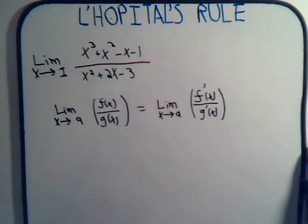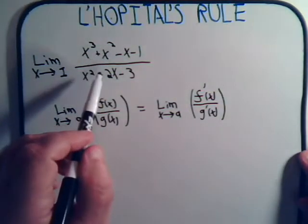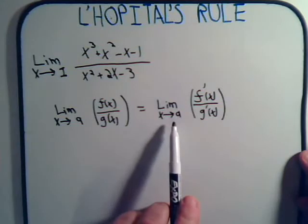when you take the derivative of f of x and the derivative of g of x. And the reason this is so helpful is that when you take the derivatives here, and sometimes when you put in x equal A, it gives you a meaningful answer, instead of 0 over 0.